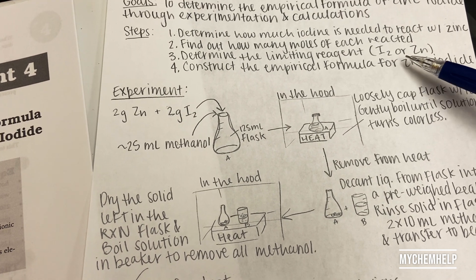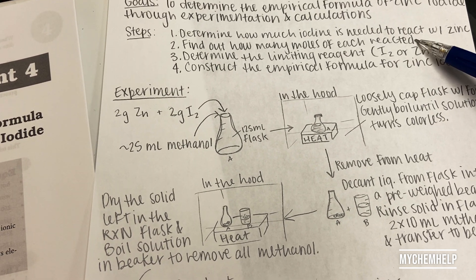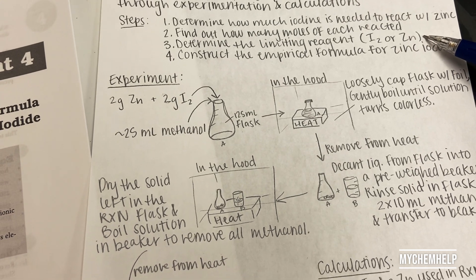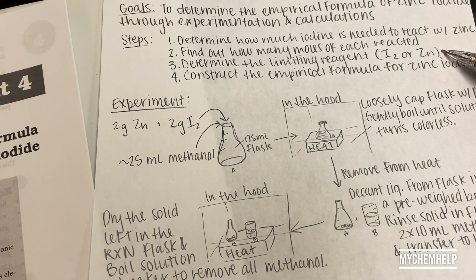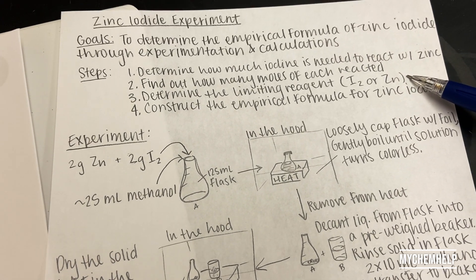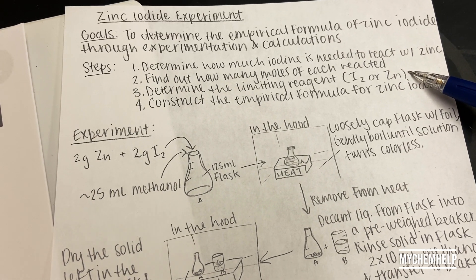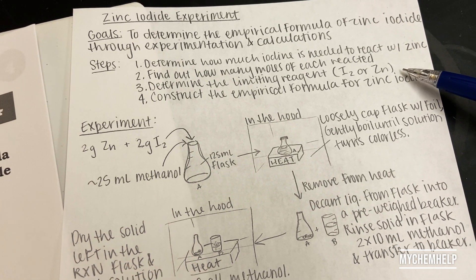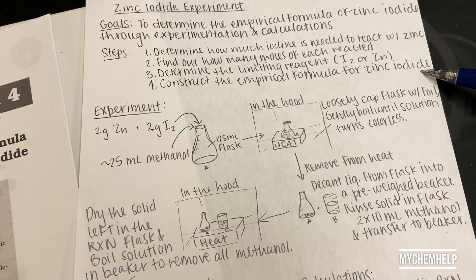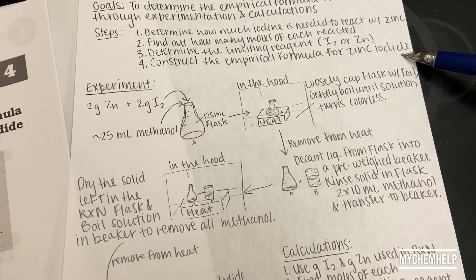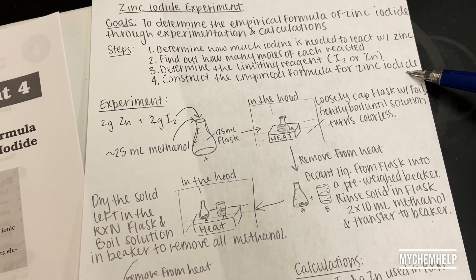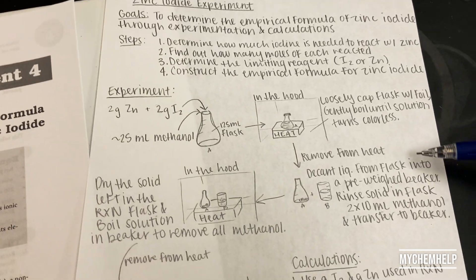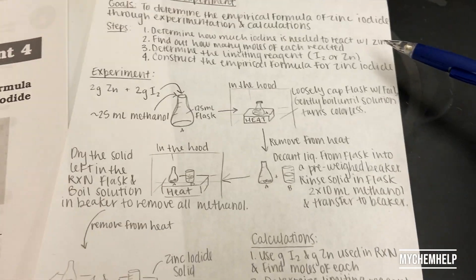From that, we should be able to determine which one is the limiting reagent — whichever one has the least amount of moles in that reaction — and then we can construct the empirical formula for zinc iodide.